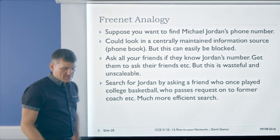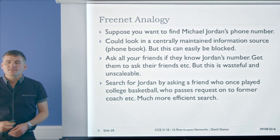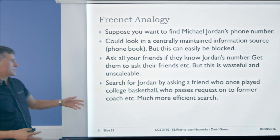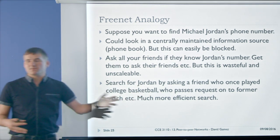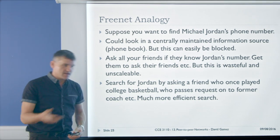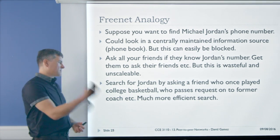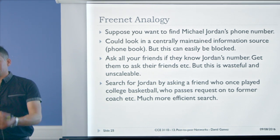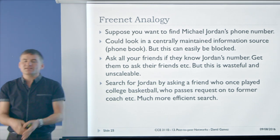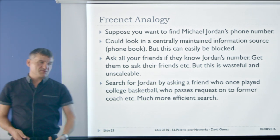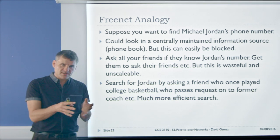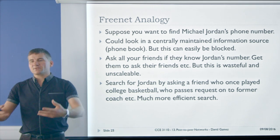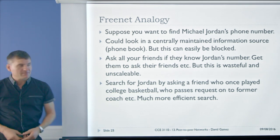Instead, Freenet uses a heuristic search. Rather than asking all your friends, you ask the ones most likely to have the information — for example, a friend who played college basketball, whose former coach has more powerful contacts that might eventually lead to Michael Jordan. It's a very channeled search that focuses on contacting people more likely to have the information you require. This is the core idea behind Freenet's more efficient routing.